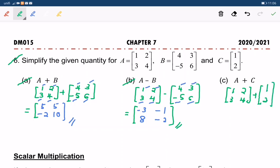It seems something is wrong here. Let's check the order. The order for matrix A is 2 times 2, while matrix C is 2 times 1.